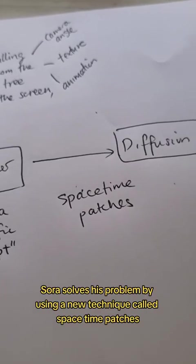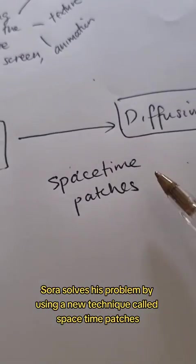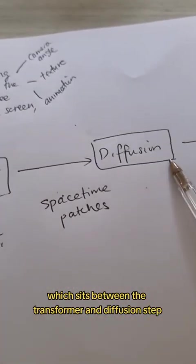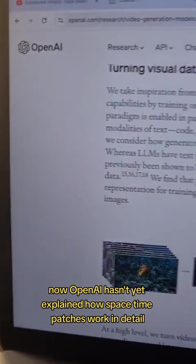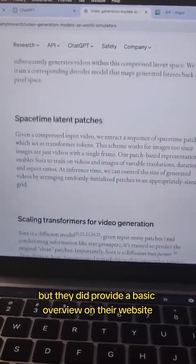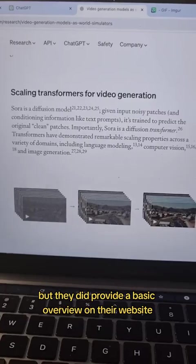Sora solves this problem by using a new technique called space-time patches, which sits between the transformer and diffusion step. Now, OpenAI hasn't yet explained how space-time patches work in detail, but they did provide a basic overview on their website.